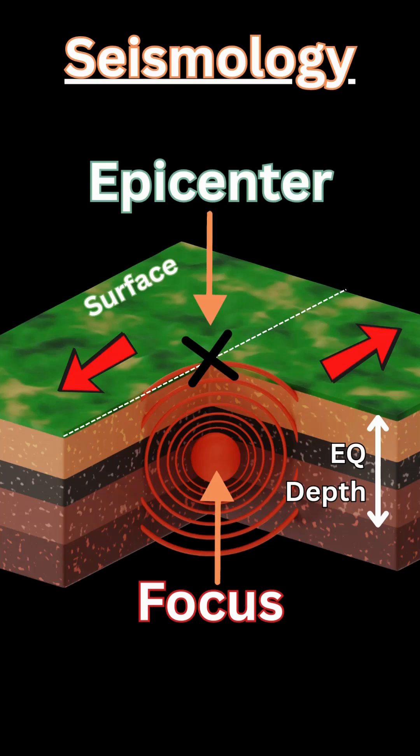The epicenter is directly above the focus and is used for location and maps. The epicenter is what you see on a map when an earthquake occurs around the world, and the depth indicates where the focus took place on that particular earthquake.